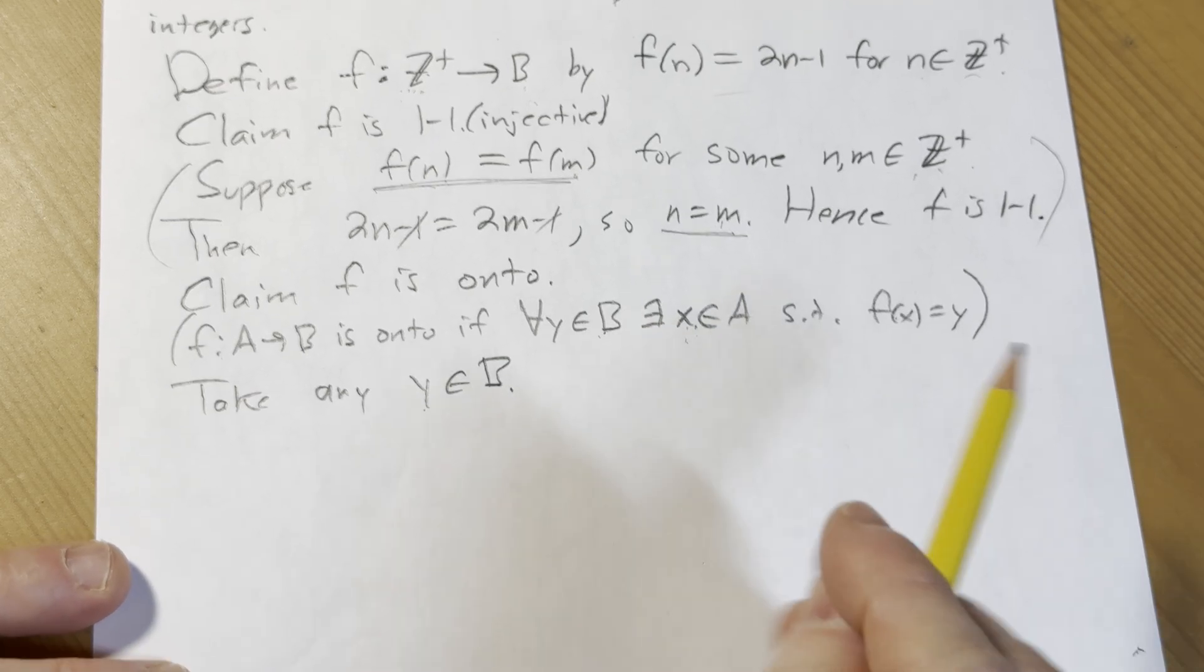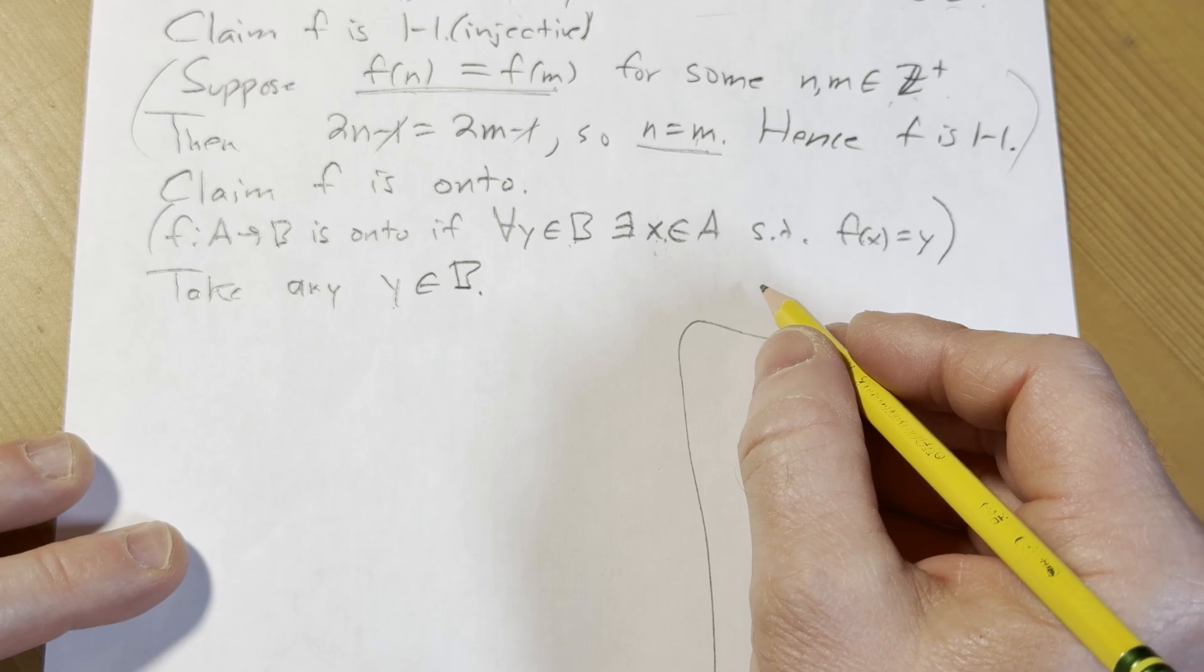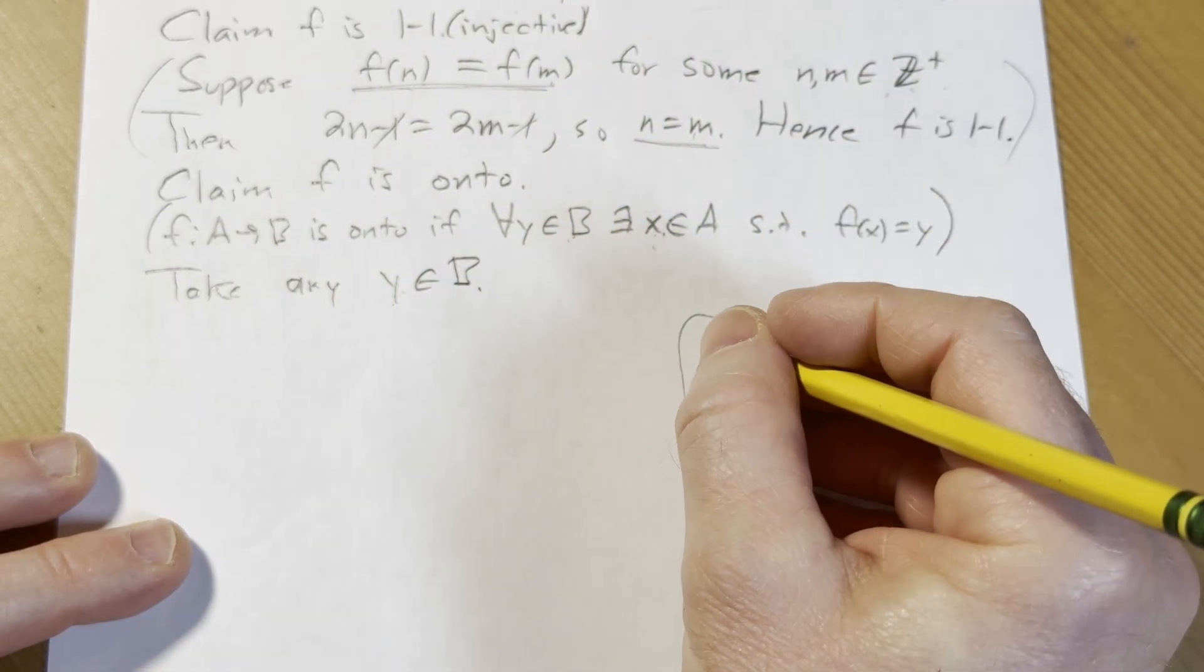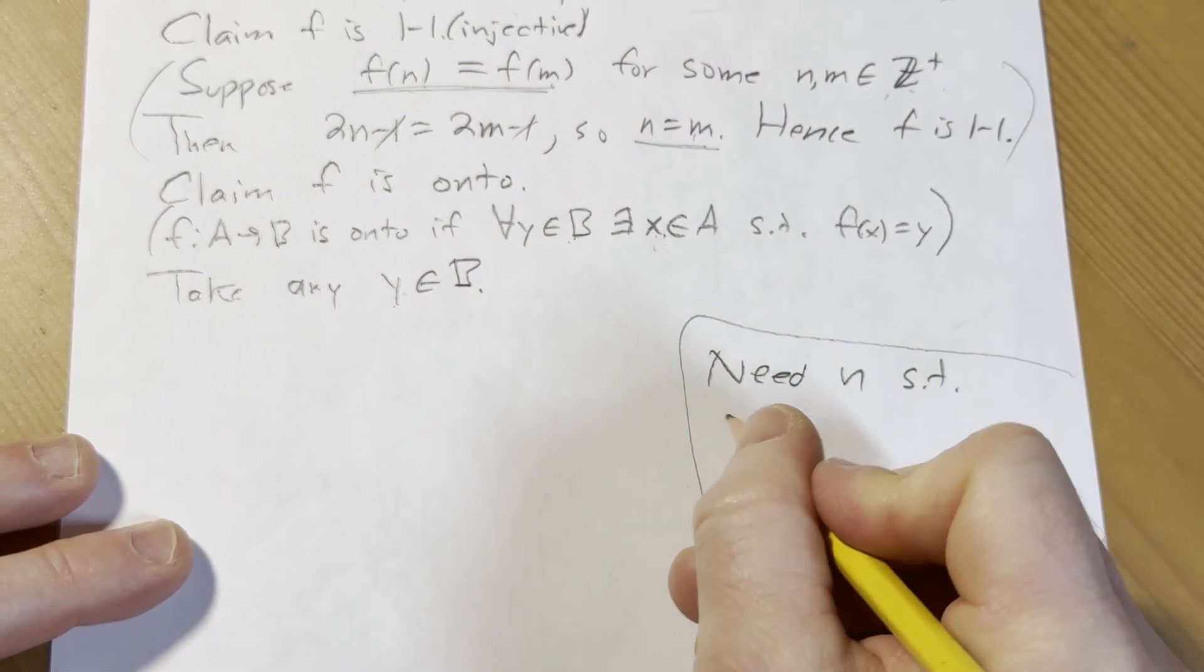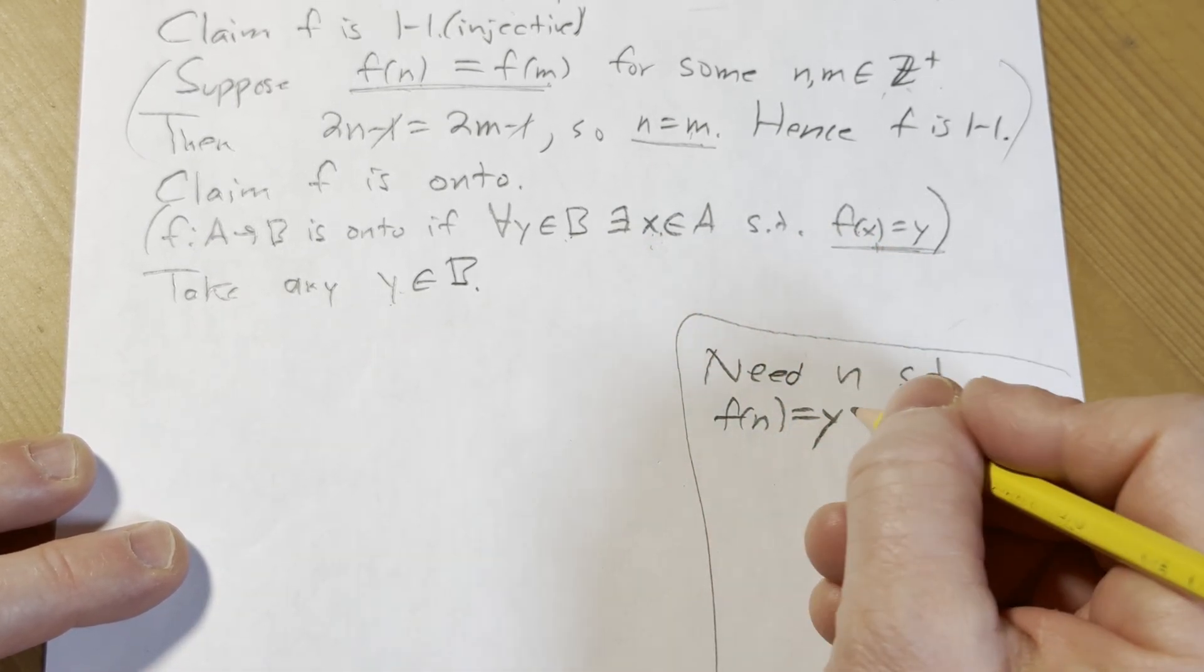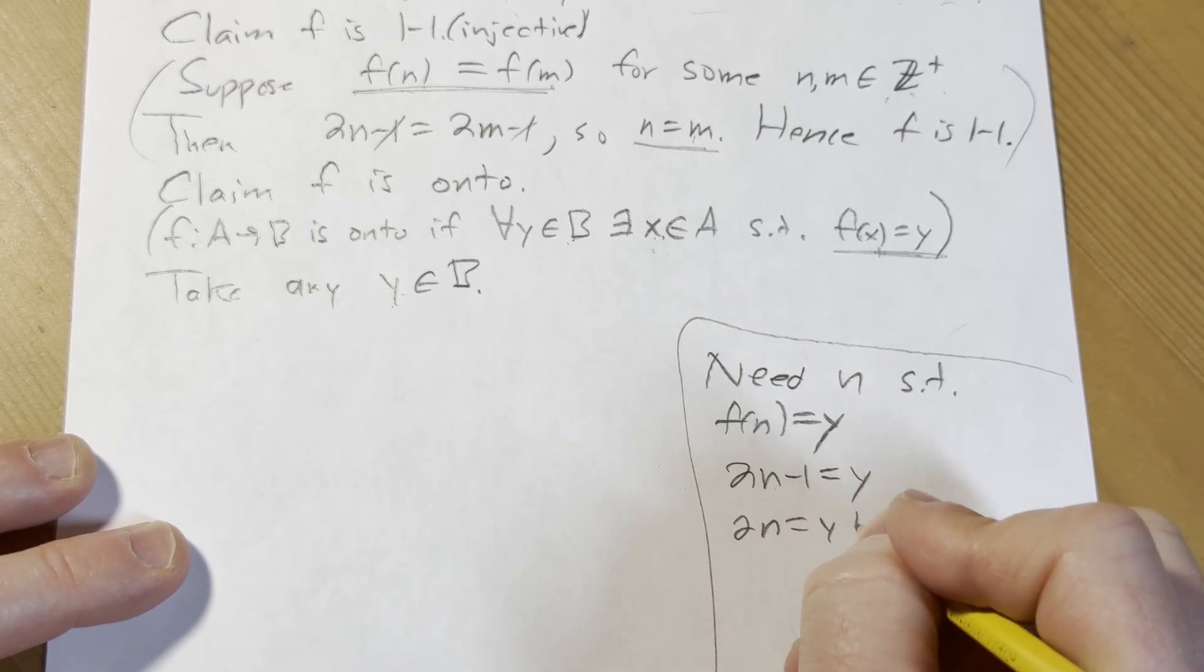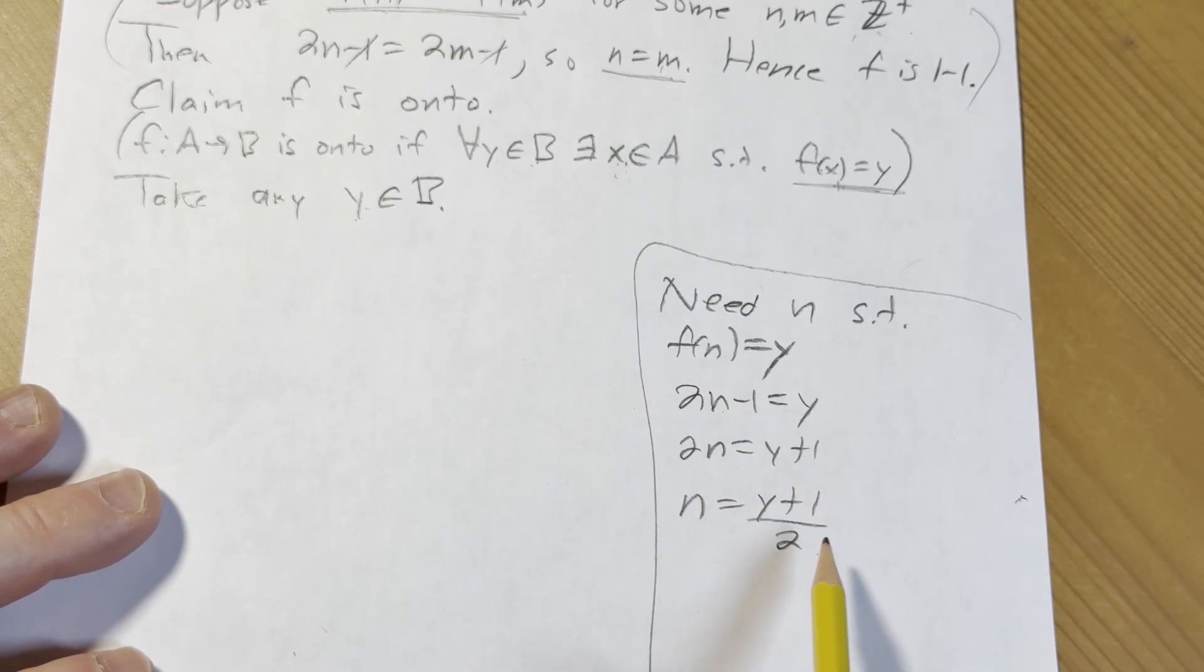And we have to produce x. So this is where we have to deviate from the proof and do some scratch work. So if we're taking y in B, we have to find n. We're taking a y in B and we have to find n such that f of n equals y, right? That's what the definition says. f of x equals y, except for us it's n. So 2n minus 1 equals y. So 2n equals y plus 1. So n equals y plus 1 over 2. So we have to show now that n is an integer. We have to verify this and we will in a minute.